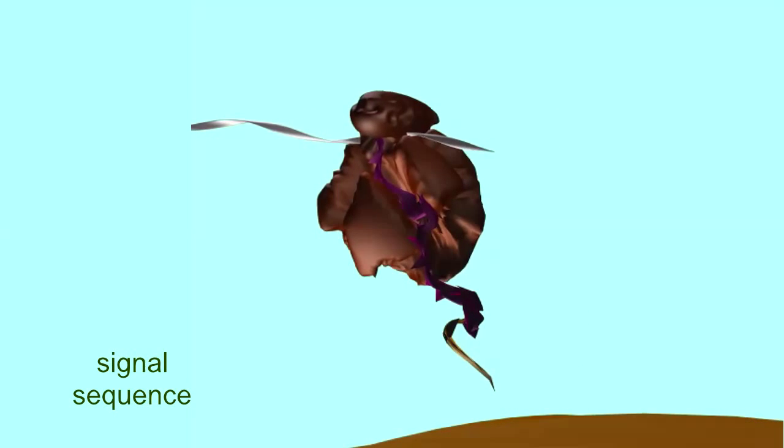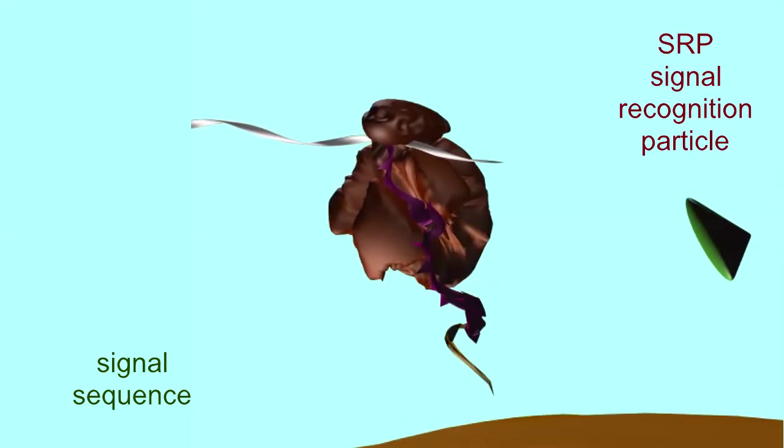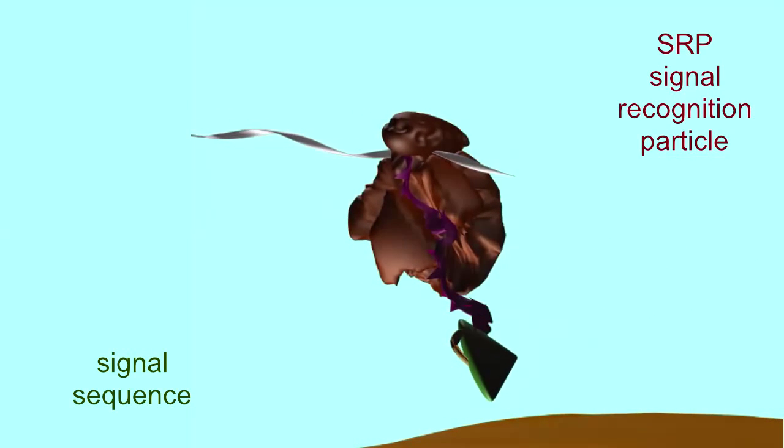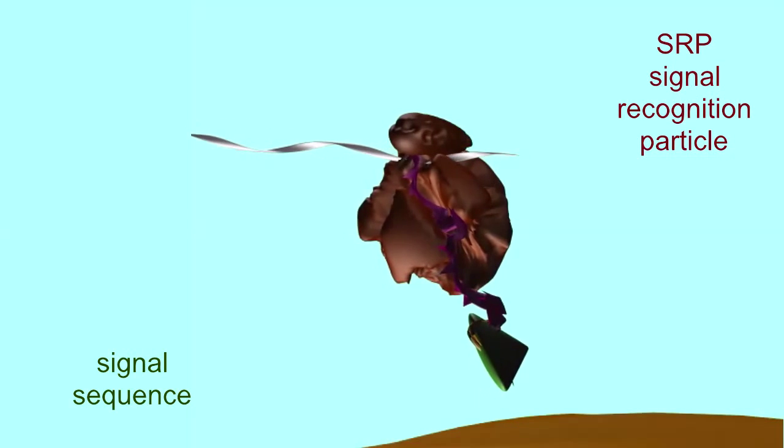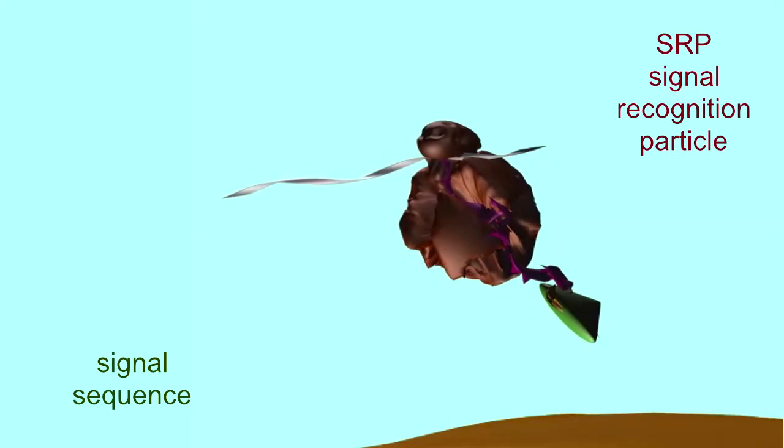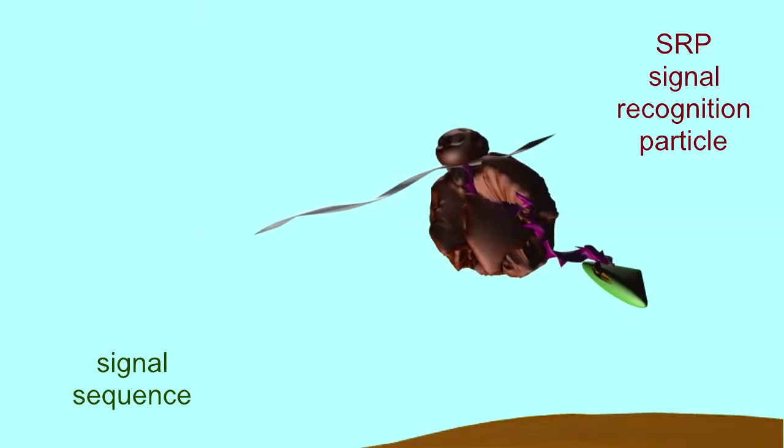This signal sequence of amino acids will bind to the SRP particle, the signal recognition particle, which is composed of both RNA and protein. This binding will pause translation, known as elongation arrest.